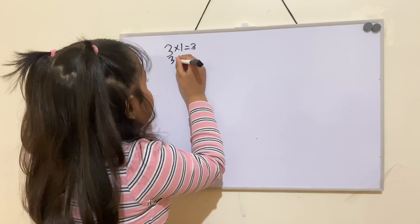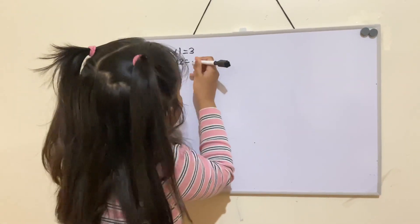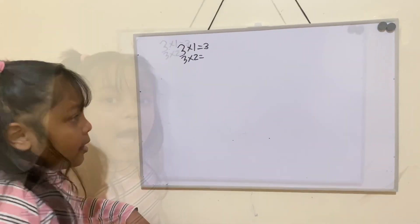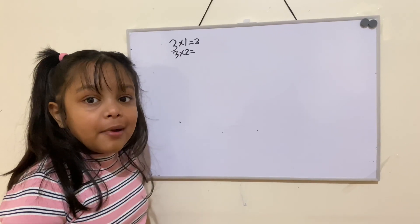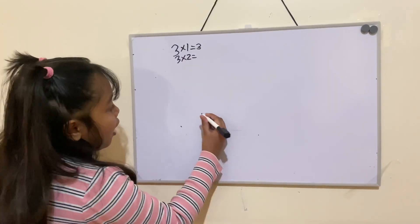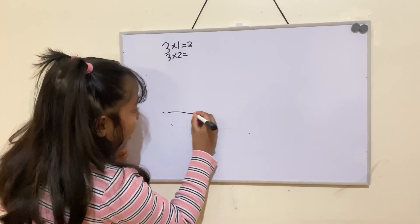3 times 2 equals something. I'm going to show you the number line method. First, you do a line.